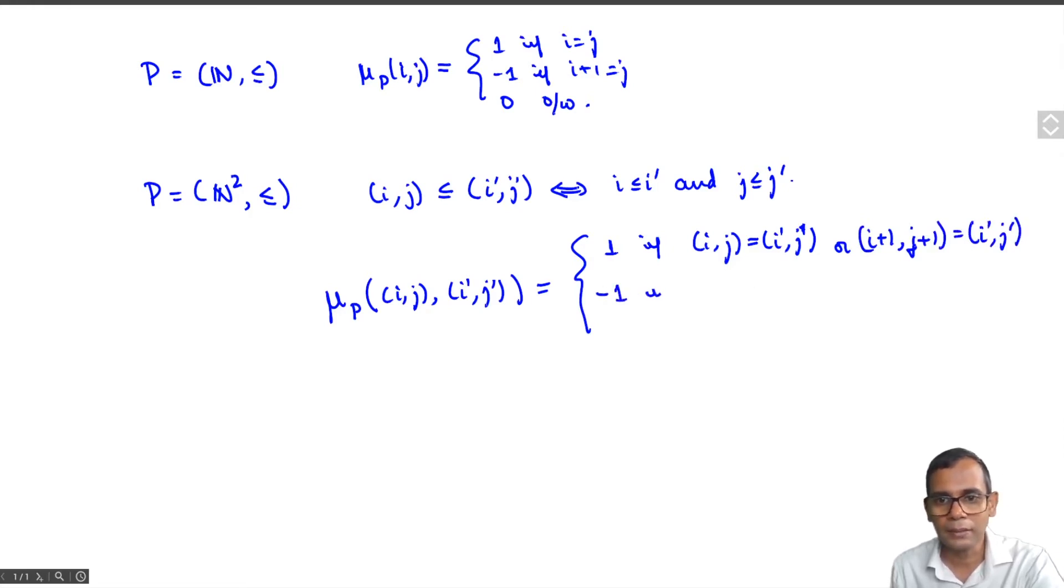It is minus 1 if (i+1,j) equals (i',j') or (i,j+1) equals (i',j'), and it is 0 otherwise.